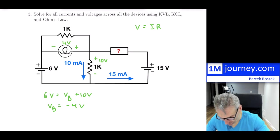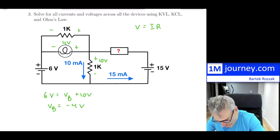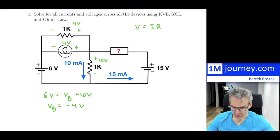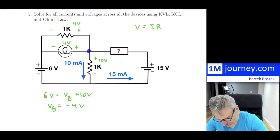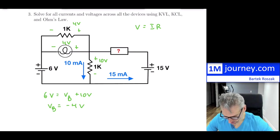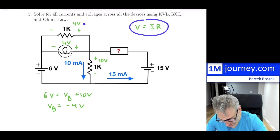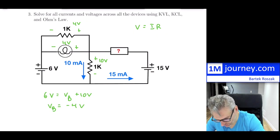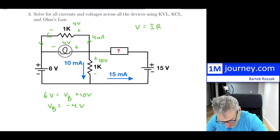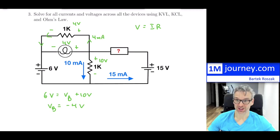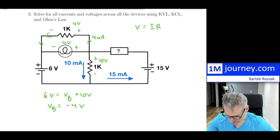Since the bulb is in parallel with the 1 kΩ resistor, the voltage across the 1 kΩ is also 4 volts. Using V = IR: I = 4 V / 1 kΩ = 4 milliamps flowing through that branch.